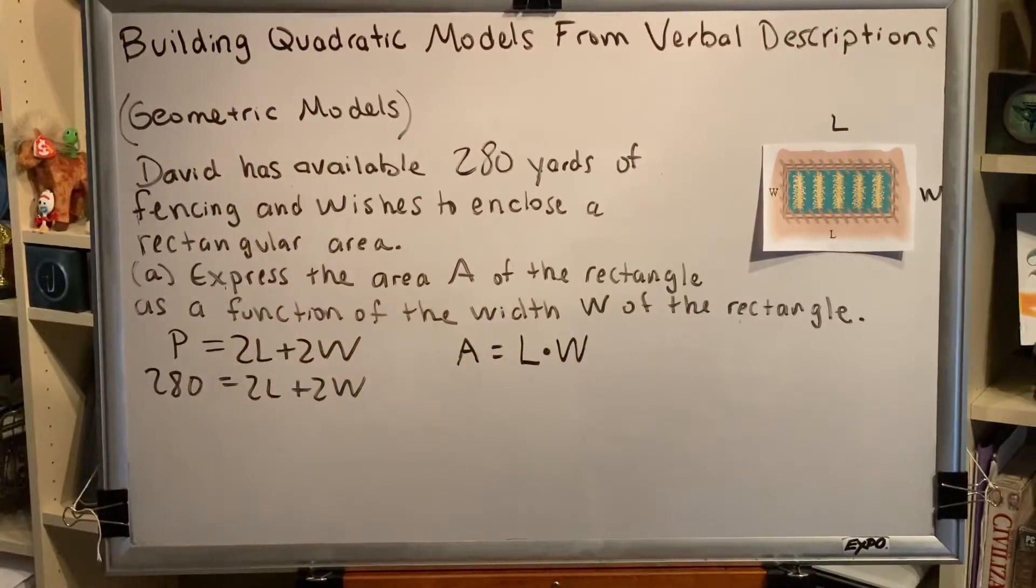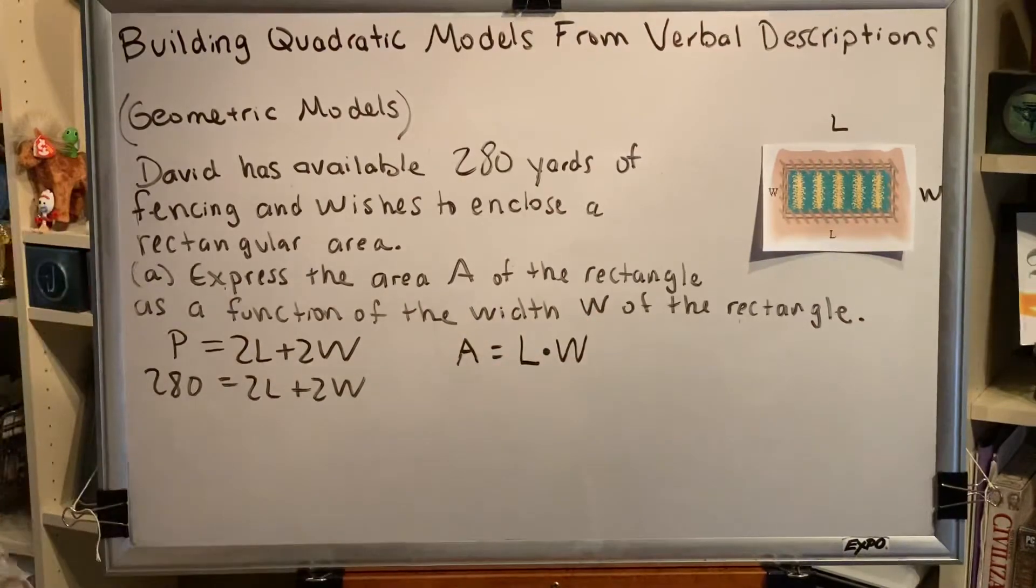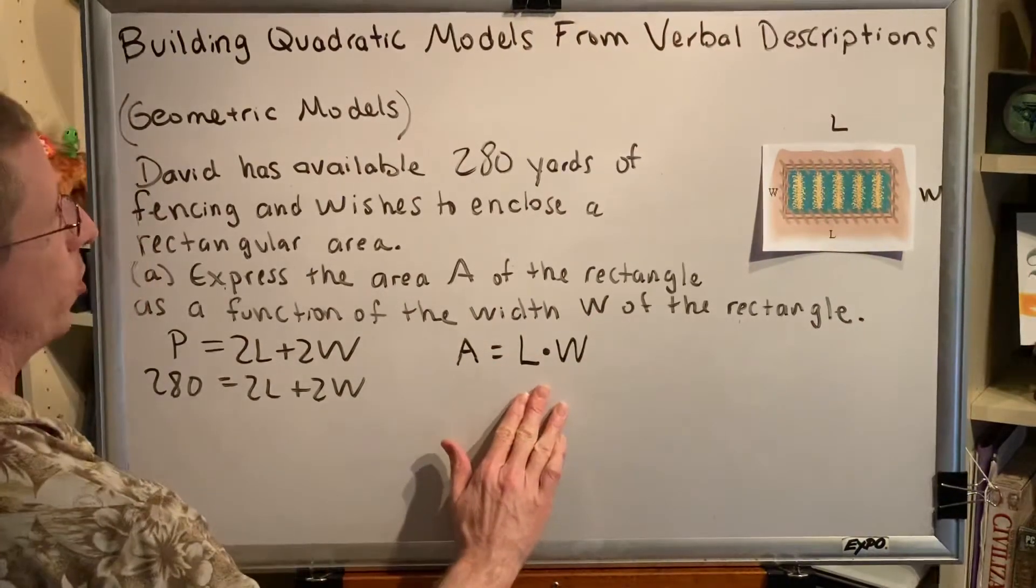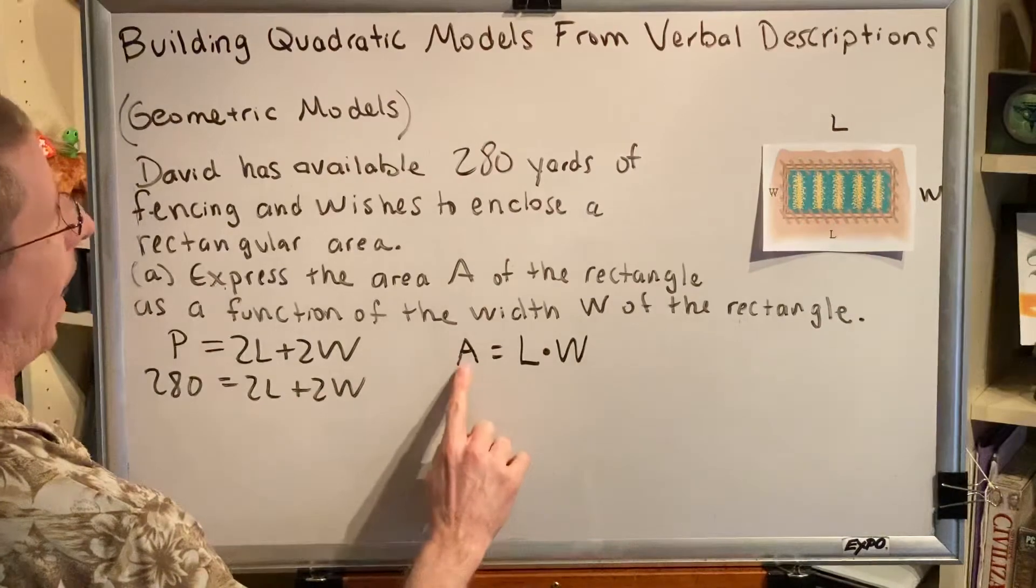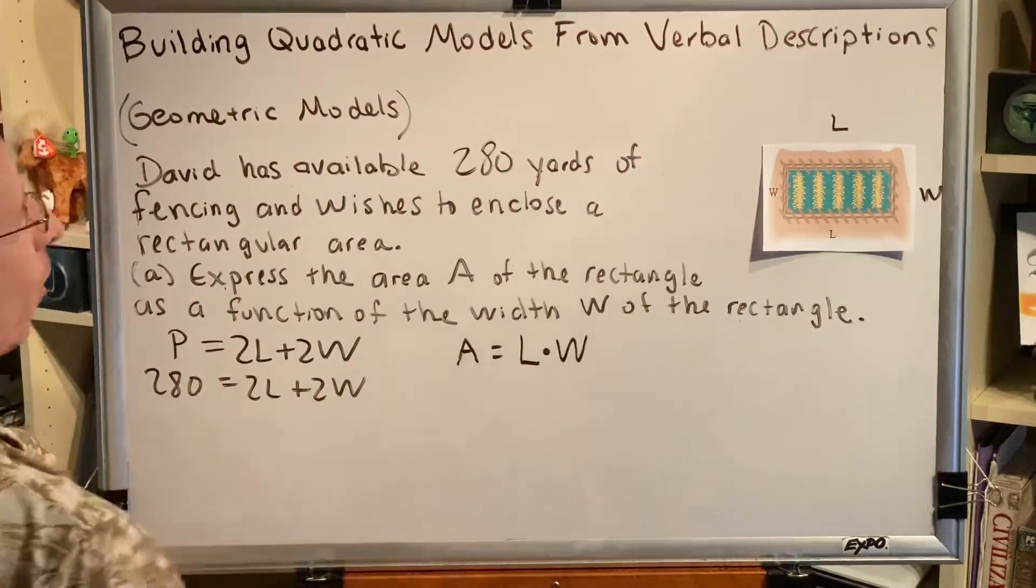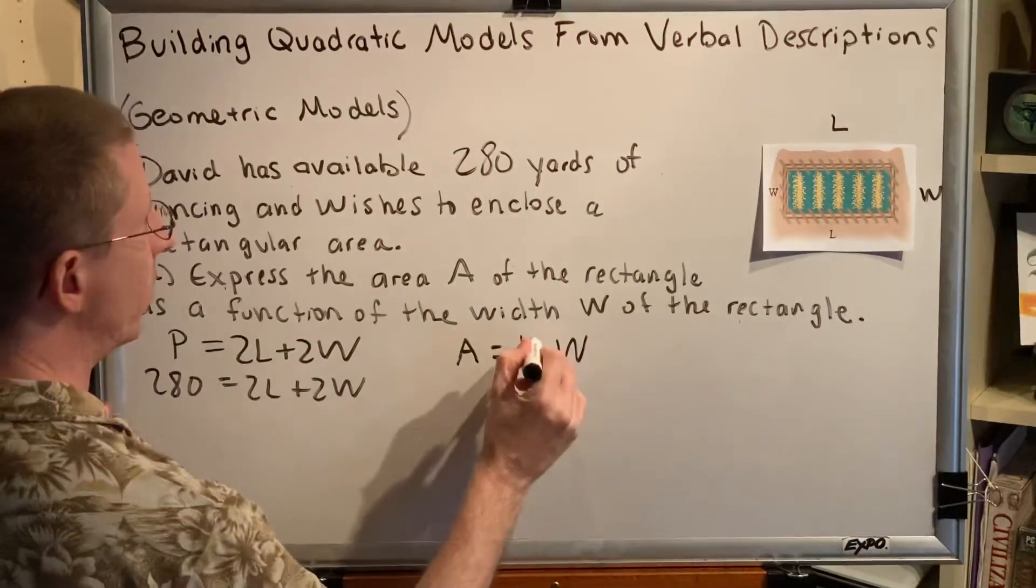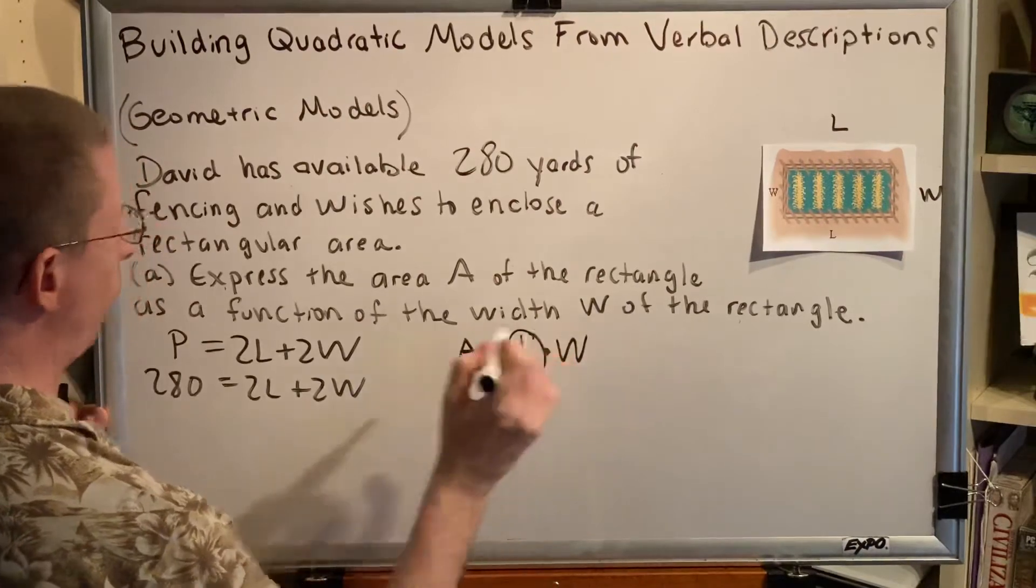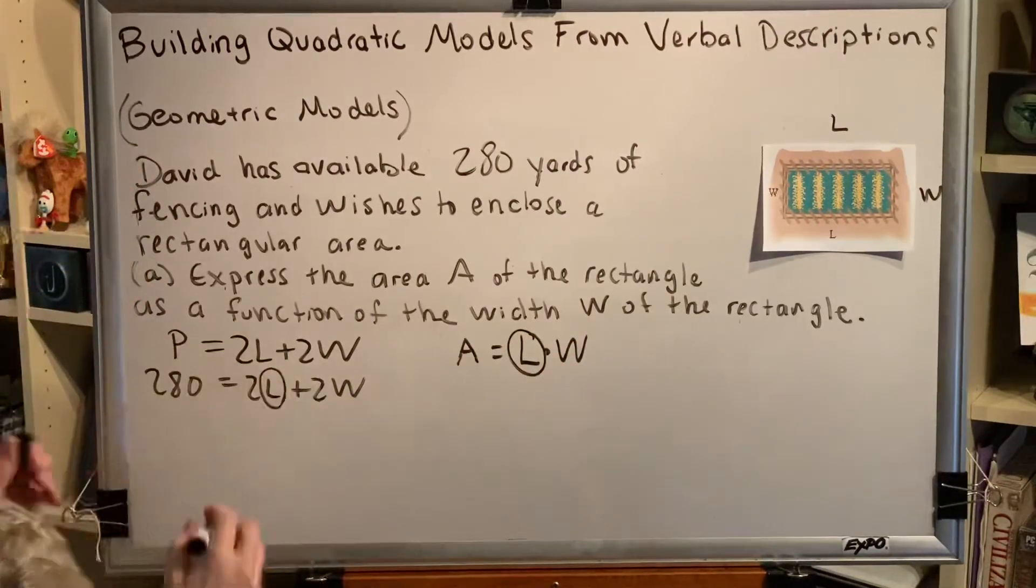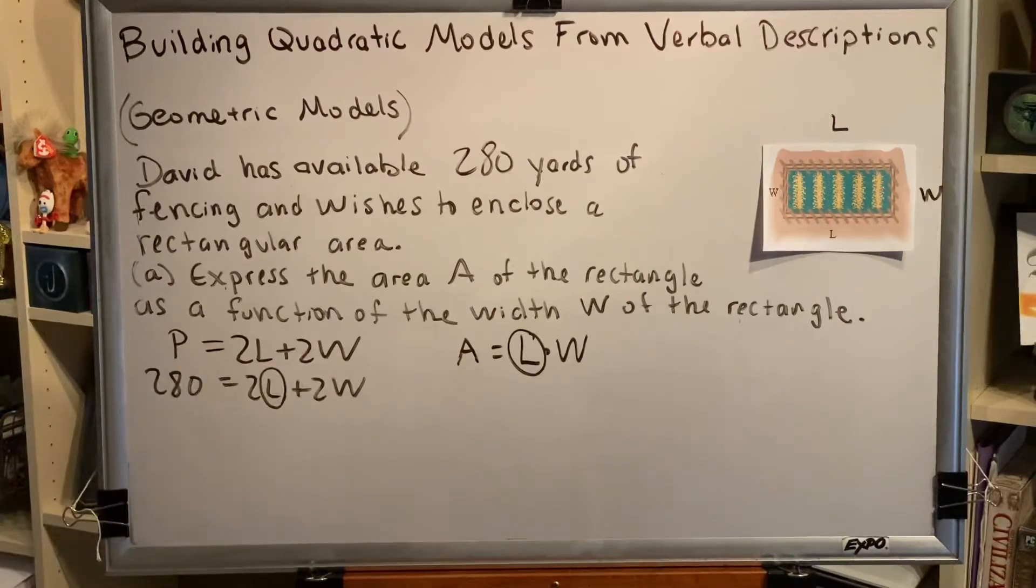Okay, now that we've got all of our problems set up, we're ready to actually begin solving the problem. We're asked to express A as a function of the width W. That means that we're only allowed to have those two letters in our equation, A and W. We need to find a way to remove the L from this equation, and we will do that by substitution. So since L is the thing that we are trying to get rid of, L is the thing that we need to try to solve for in the other equation so that we can make our substitution.